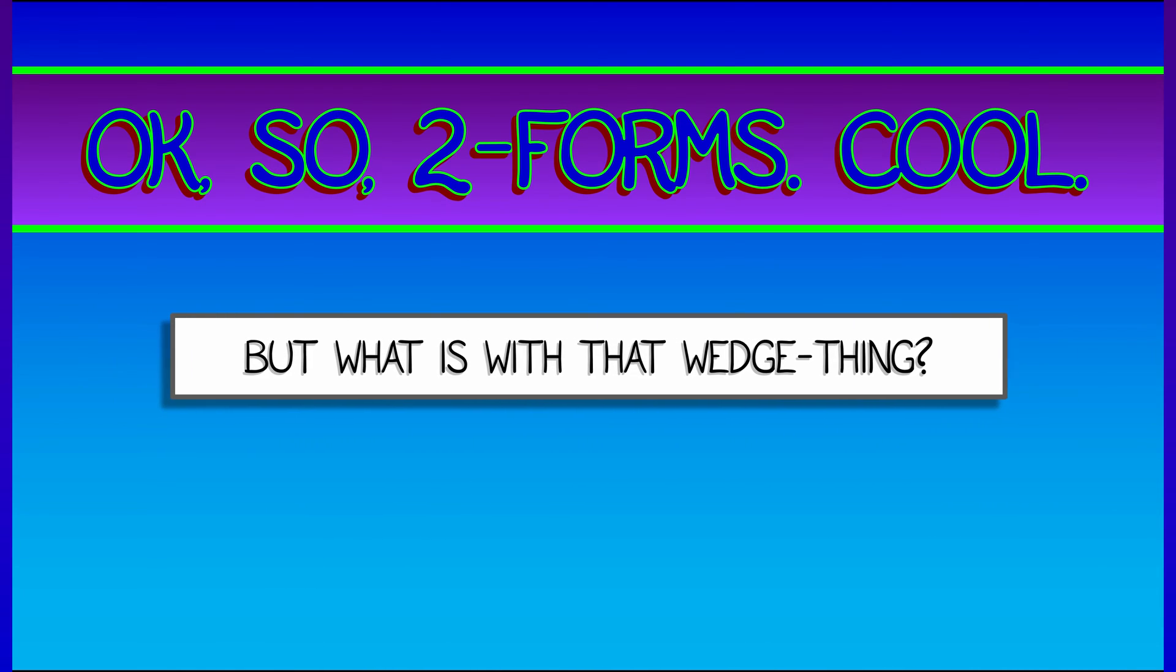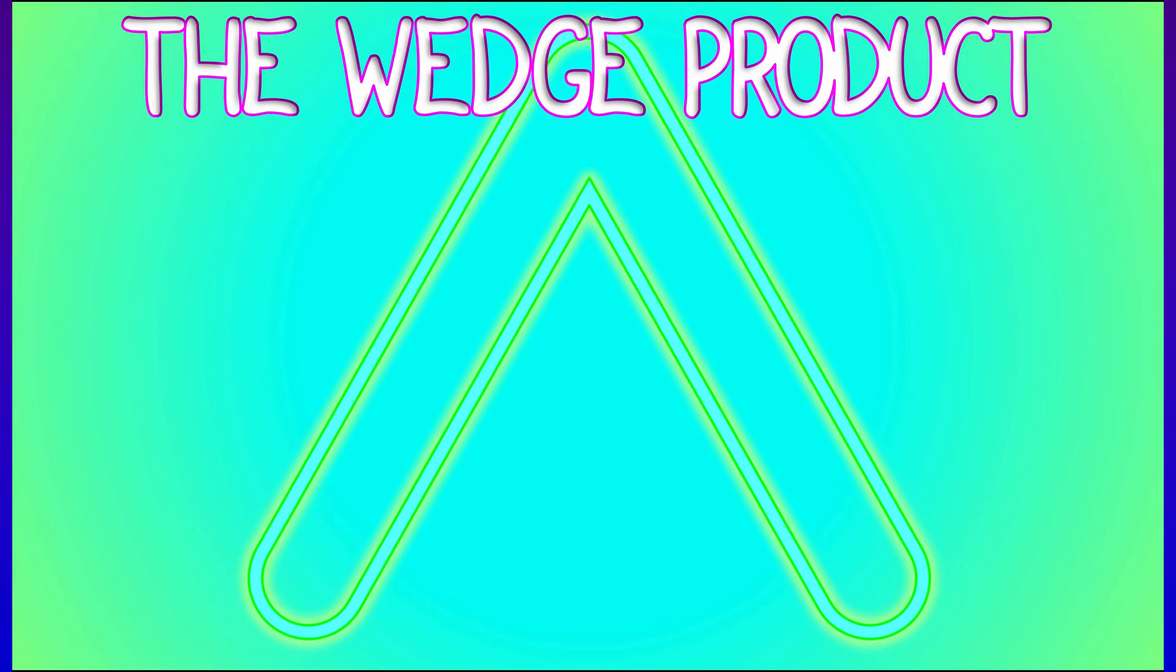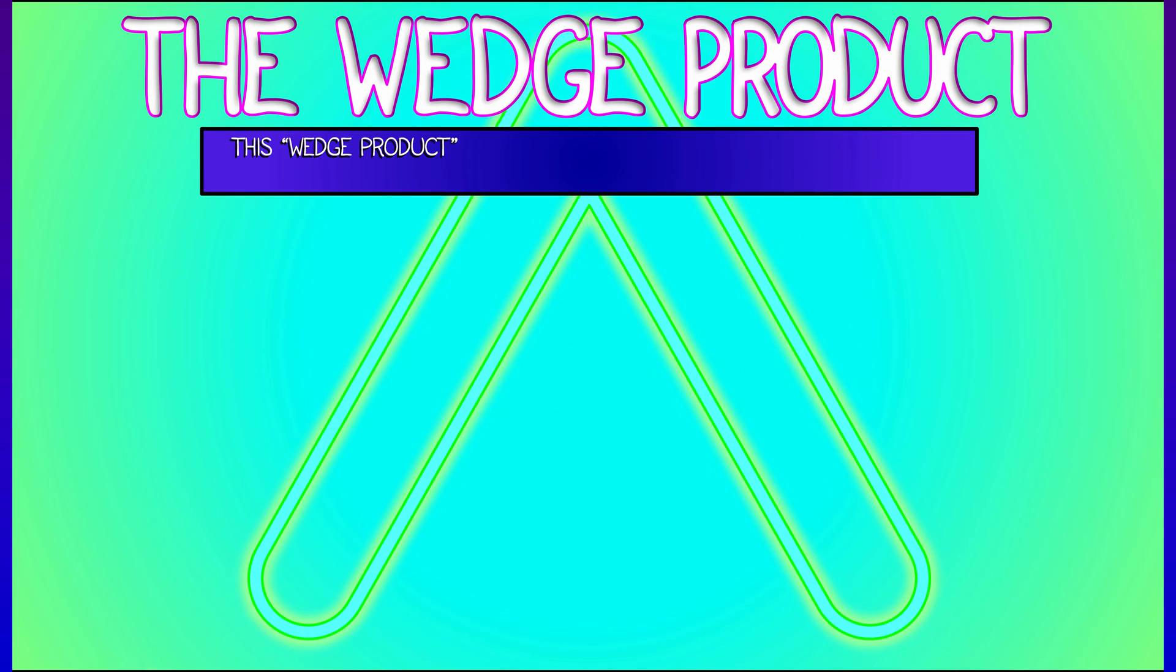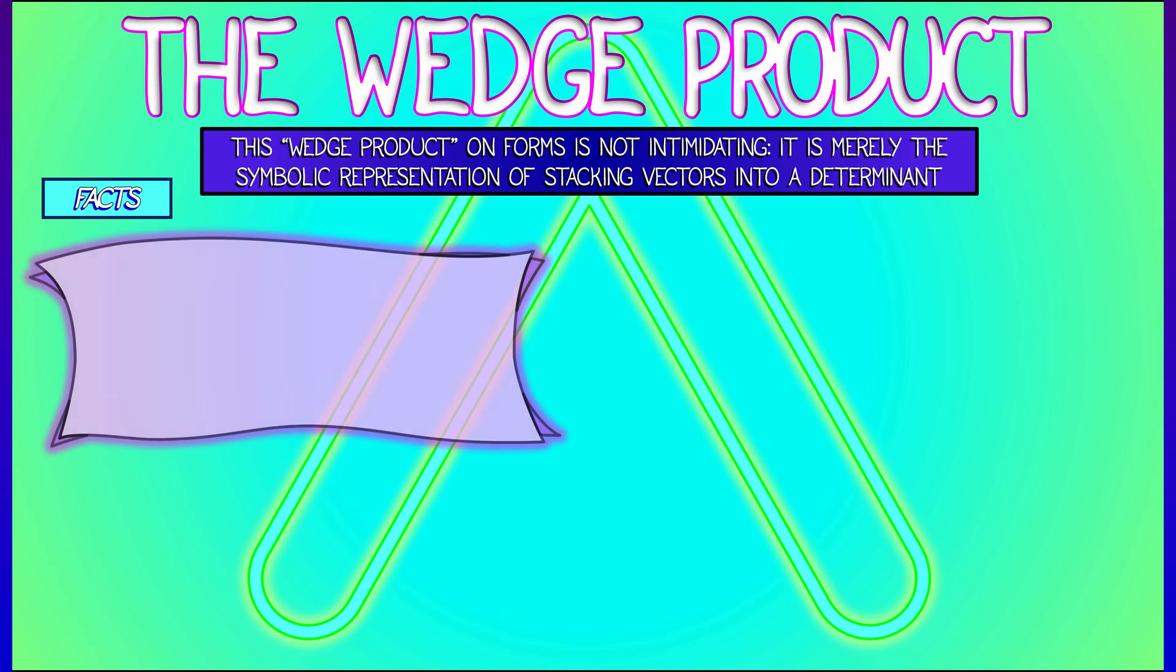Okay, so we've got two forms and two form fields down, but there are a lot of questions that remain. First of all, what is with that wedge thing? Why do we keep using that symbol? How do we go from two forms to three forms and four forms? Well, the answers to all of these questions are bound up in this wedge product, in this funny-looking symbol that shouldn't intimidate you. It's really just a symbolic representation of what happens when we convert vectors into a matrix and take a determinant.